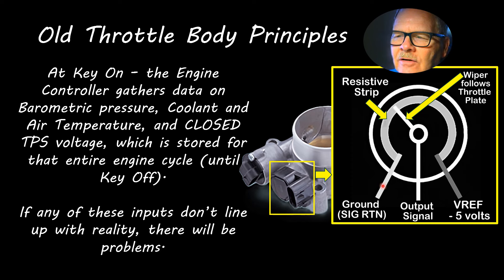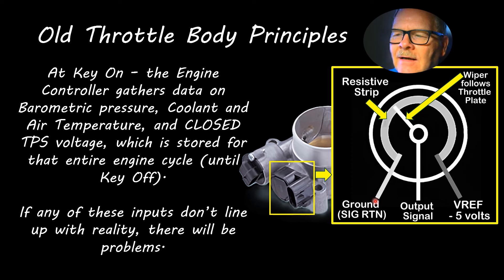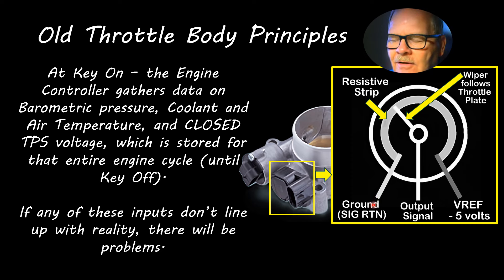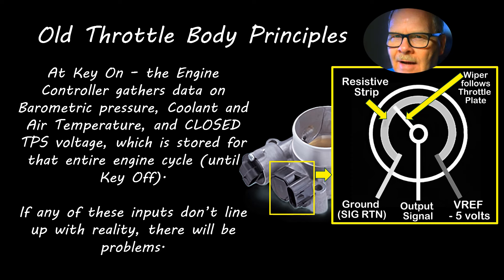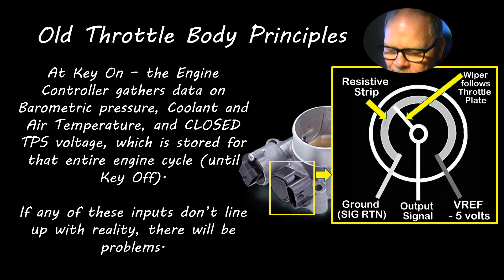If you back-probe the output signal wire and you're seeing 5 volts, you've lost the signal return ground. You can demonstrate that by unlatching your signal return wire — if you don't have that signal return, you'll get a full 5 volts. I have seen vehicles where the signal return ground had been lost inside the engine controller and all the sensors were reading maximum voltage. All I did — and probably it wasn't the right way — was ground that signal return wire because it went to all the sensors, and that would bring them all back online and the car would start and run fine.